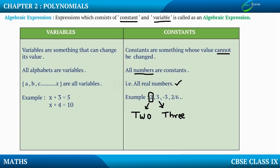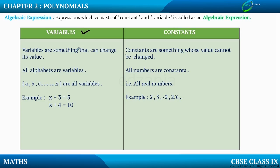Now let us move on to variables. What are variables? Variables are something that can change their value — that means it is exactly opposite of the constant. All alphabets are variables. We are already aware of what an alphabet is. Alphabets are all from a to z, and all these alphabets are said to be variables.